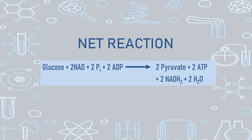The EMP pathway is regulated by the energy charge of a cell, especially at the irreversible steps — the first step, third step, and last step. Energy charge refers to the total pool of ATP, ADP, and AMP. If the energy charge is high — that is, if the quantity of ATP is high — it provides feedback to the EMP pathway and slows down the rate of glycolysis. When ATP is insufficient, the glycolysis rate picks up. This is the major mode of regulation of the EMP pathway.